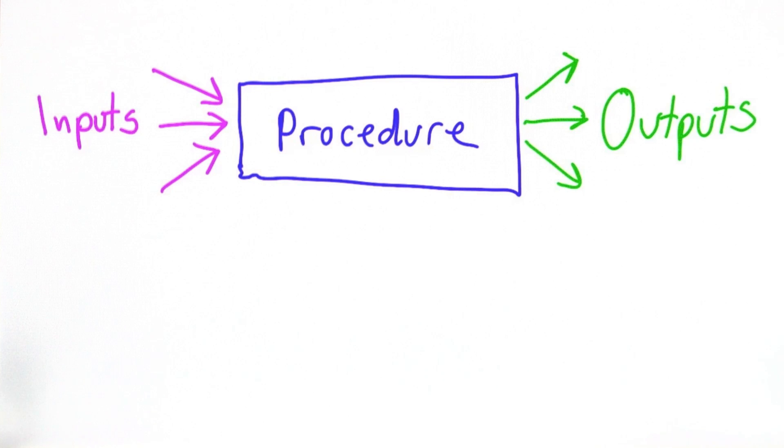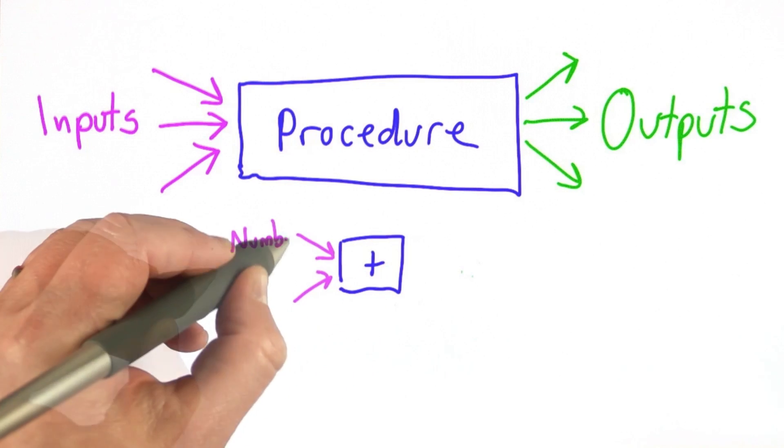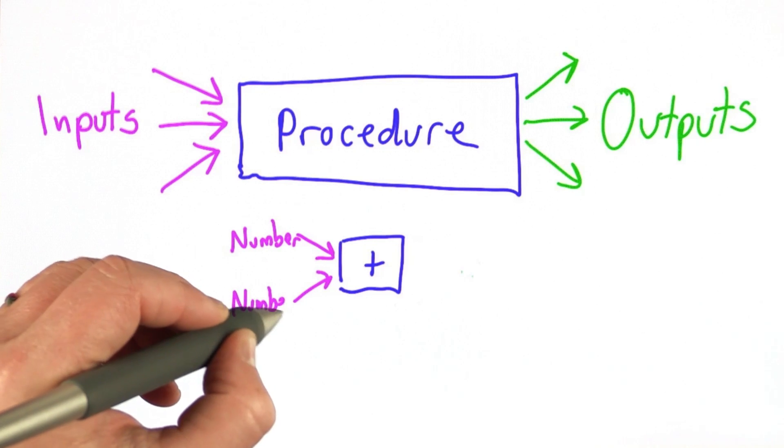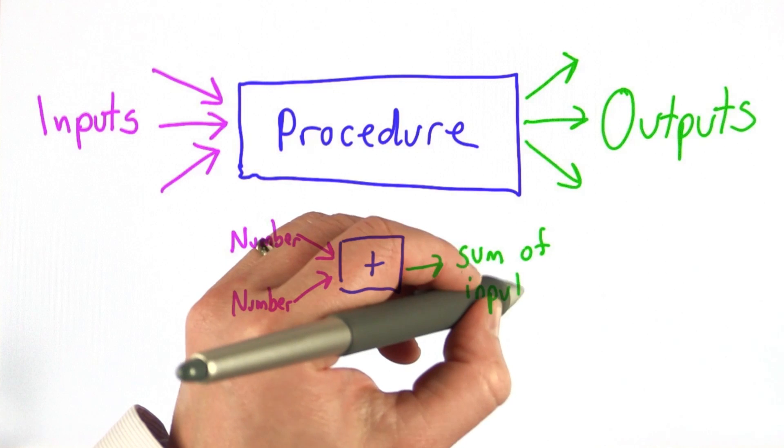You've seen things very similar to procedures in the previous unit. You saw the built-in operators, operators like plus. Plus took two numbers as its inputs, and as its output, it produced the sum of those two numbers.